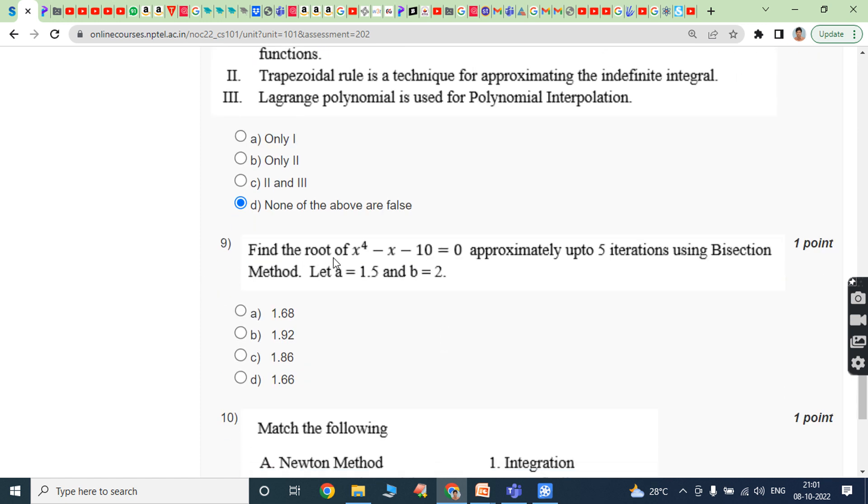Ninth question: Find the root of x squared minus x minus 10 equals 0 approximately up to 5 iterations using bisection method where a equals 1.5 and b equals 2. The answer is option C, 1.86.